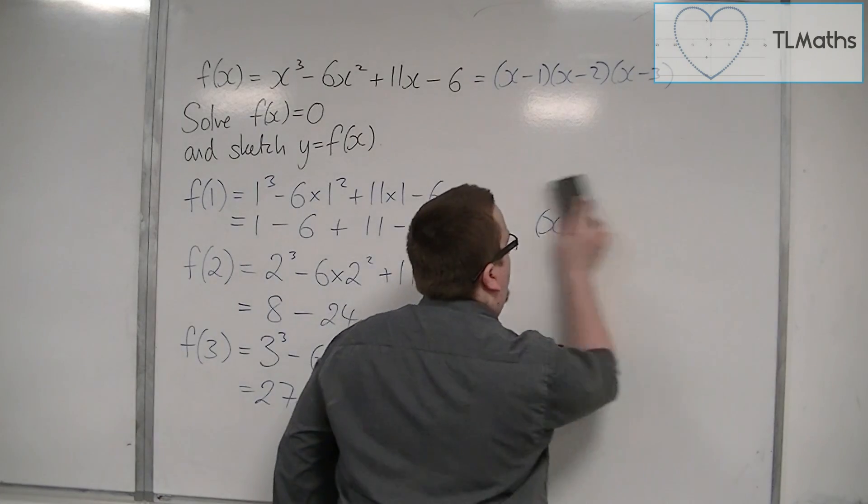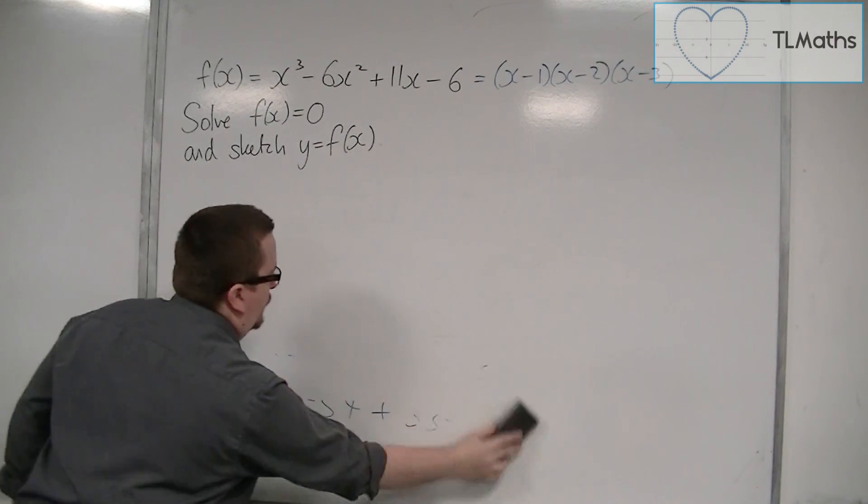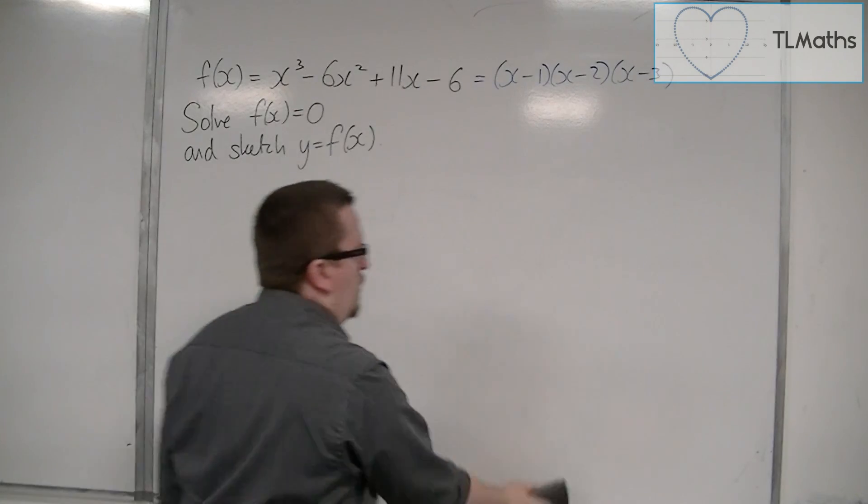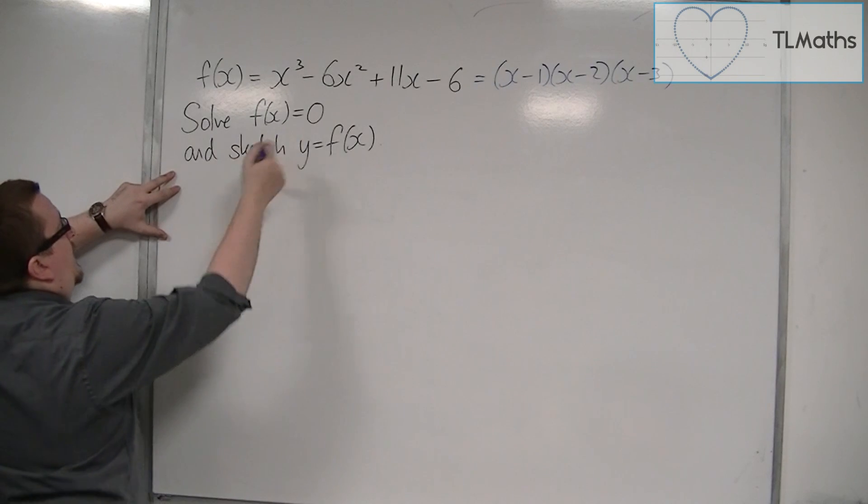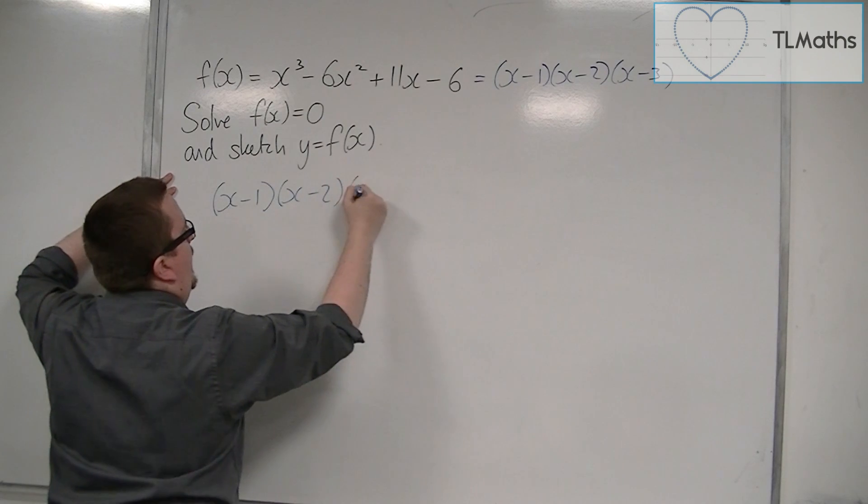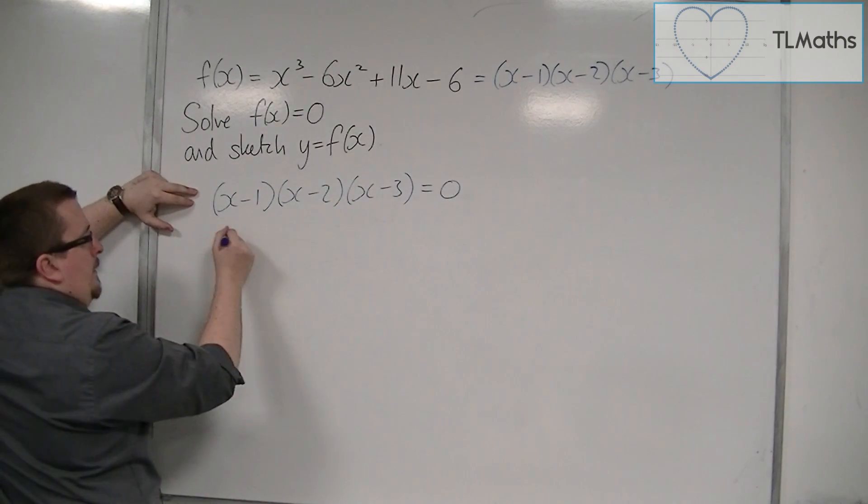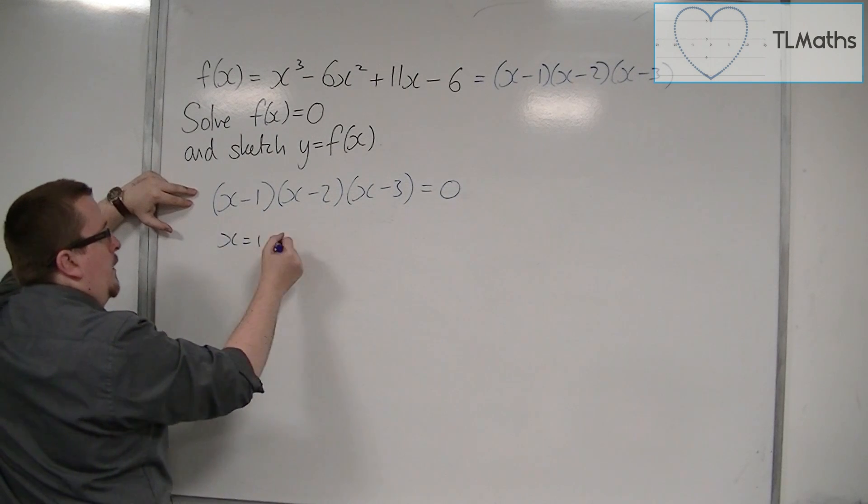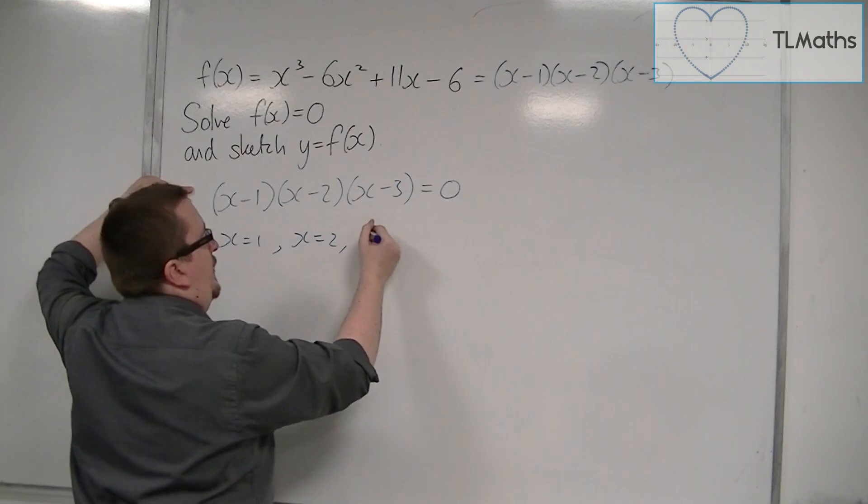So now that it's in factorized form, what I can now do is solve f of x is equal to 0. So solving f of x equals 0, that's x minus 1, x minus 2, x minus 3 equals 0. So either x is equal to 1, or x is equal to 2, or x is equal to 3.